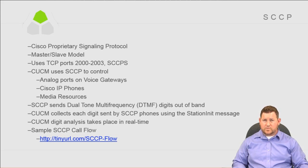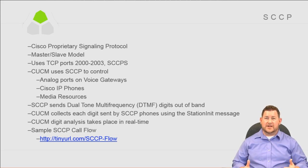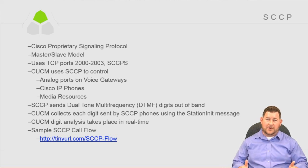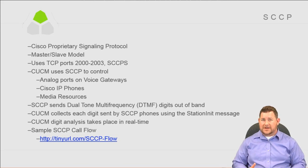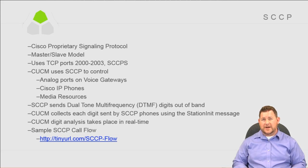SCCP is a master-slave model — one side controls the session and the other executes commands. Communications Manager is the master and the phone is the slave. It uses TCP ports 2000 through 2003, and there is SCCP-S, the secure version of Skinny. CUCM uses Skinny to control phones, to control analog ports on voice gateways, and for media resources such as transcoders, conference bridges, and MTPs — all controlled through Skinny.